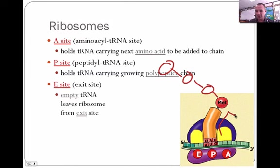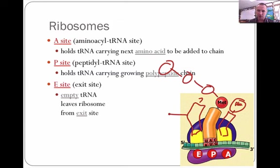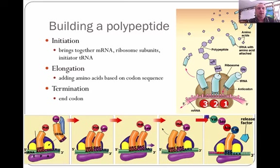There would be a tRNA here that may have alanine on it. When it goes off, another tRNA will come down, it won't have anything on it, and it'll fall off at the exit site. The others shift from place to place on down the line. When building a polypeptide, there are three parts: initiation is when you bring the mRNA, ribosome subunits, and tRNA all together to get it started.